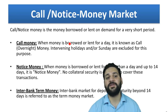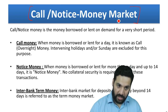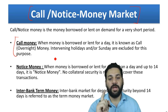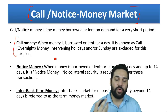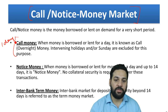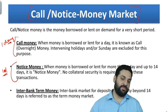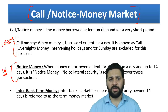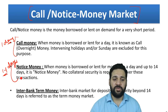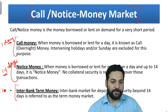Now we discuss money market instruments. The most popular are call money and notice money. Call money, also known as overnight money, is when money is borrowed for one day (excluding holidays and Sundays). Up to 14 days it is called notice money. Beyond 14 days it is known as interbank term money.